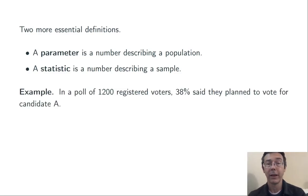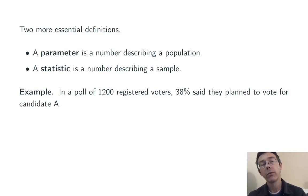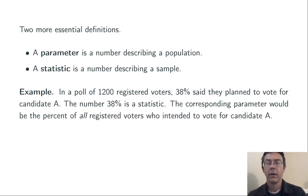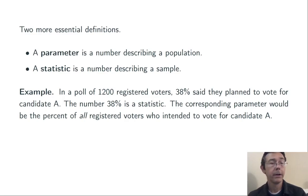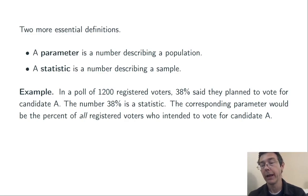Going back to that example, with a poll of 1,200 registered voters, suppose that 38% say they plan to vote for candidate A. The number 38% is a statistic — it's describing the sample. The corresponding parameter would be the percentage of all registered voters who intend to vote for candidate A.